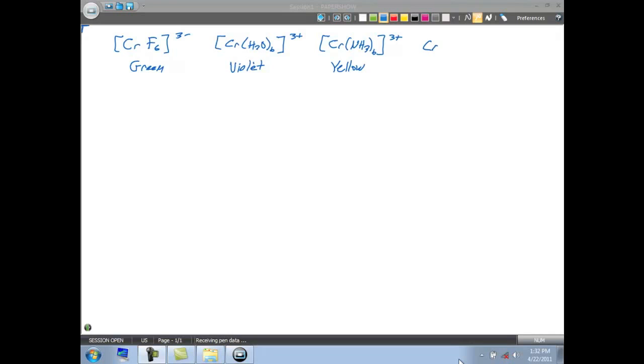And then the last complex we can make with chromium is Cr(CN)6. This has a three minus charge and has kind of a faint yellow color. This chromium solution is almost clear, but it has this yellow tinge to it. So all of these complexes have chromium three plus as the transition metal center and all of them are in an octahedral environment.